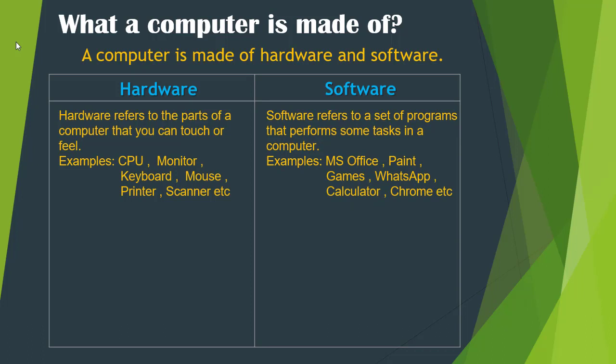And what are software? Software refers to a set of programs that perform some task in a computer. In other words, software are those parts of a computer that you cannot touch — you can only use them, because they are inside your computer. Examples are MS Office, Paint, Games, WhatsApp, Calculator, and Chrome. These are the examples of software.